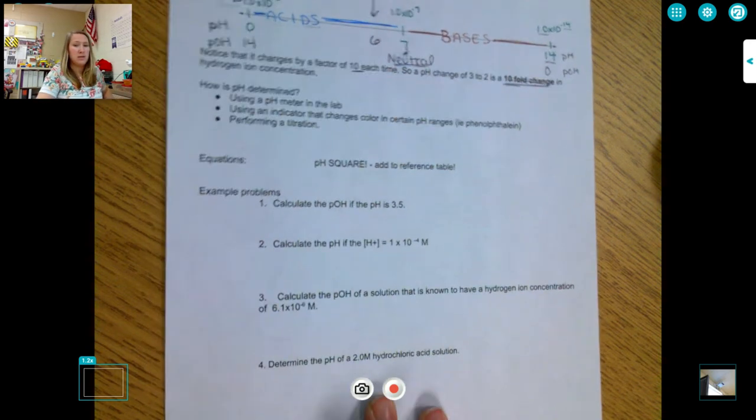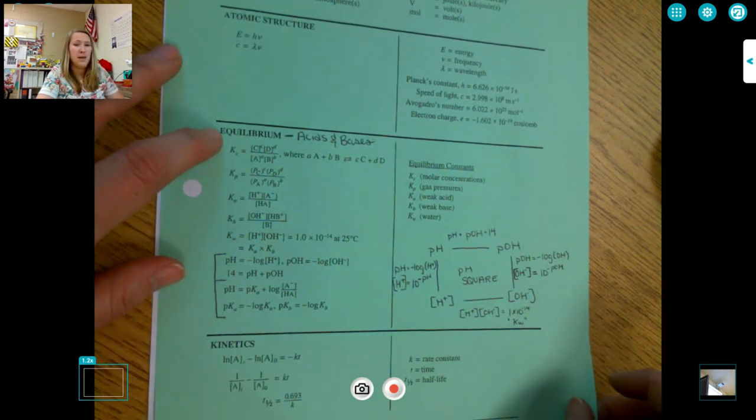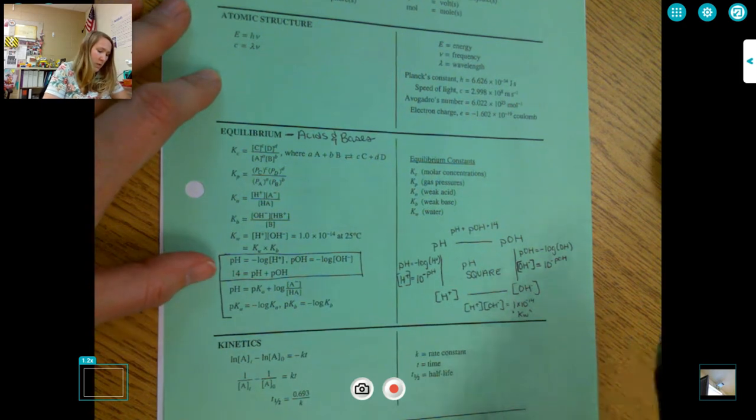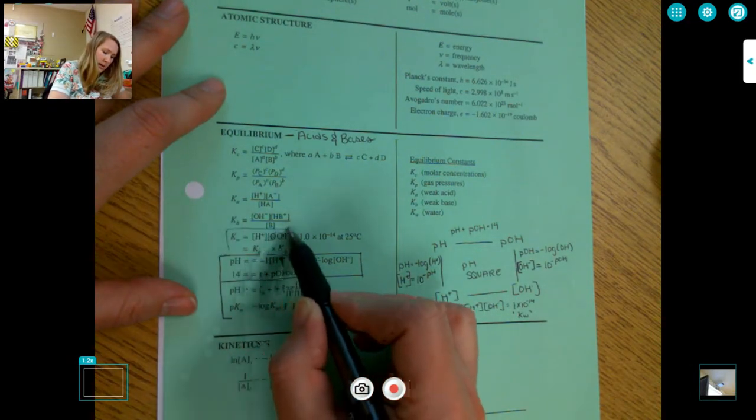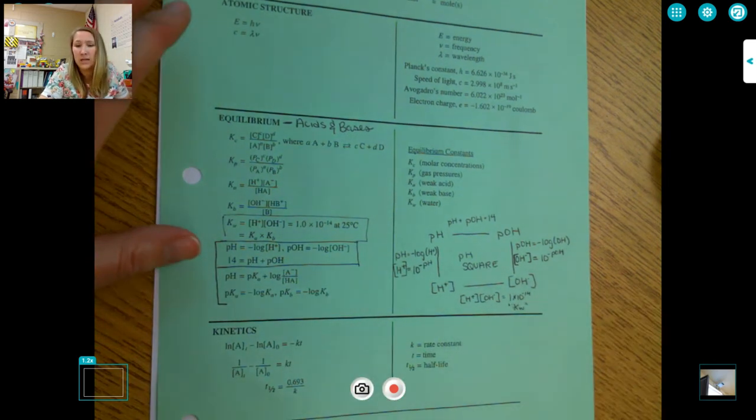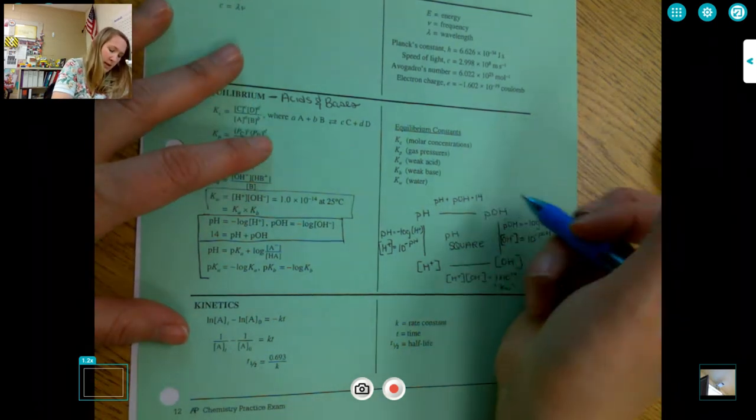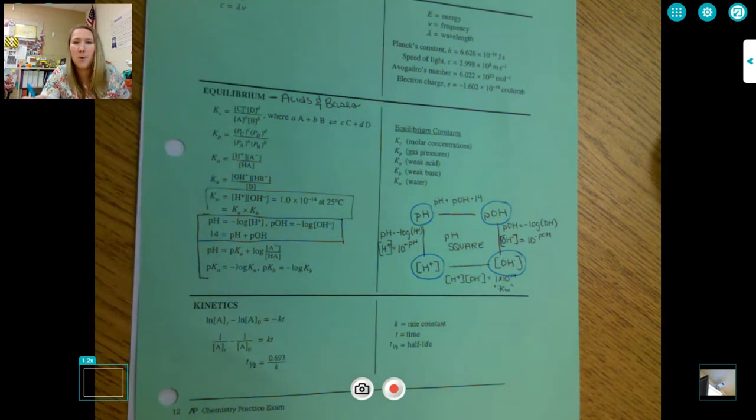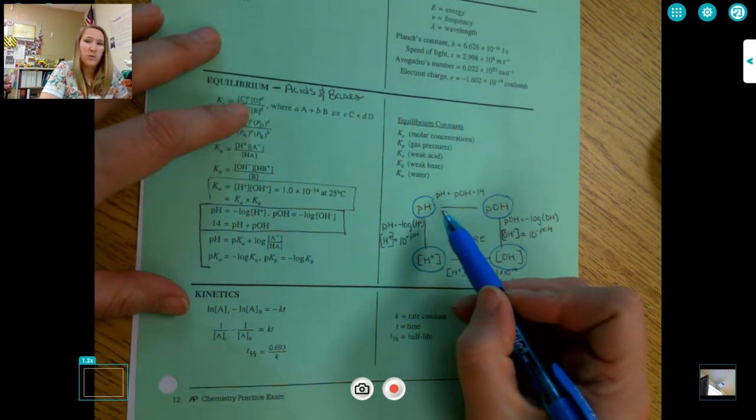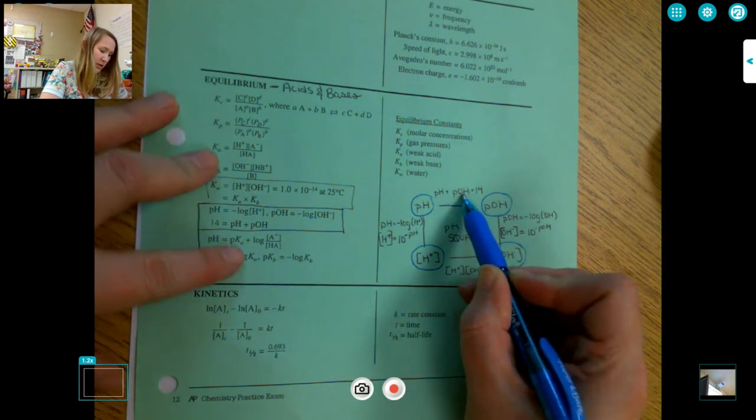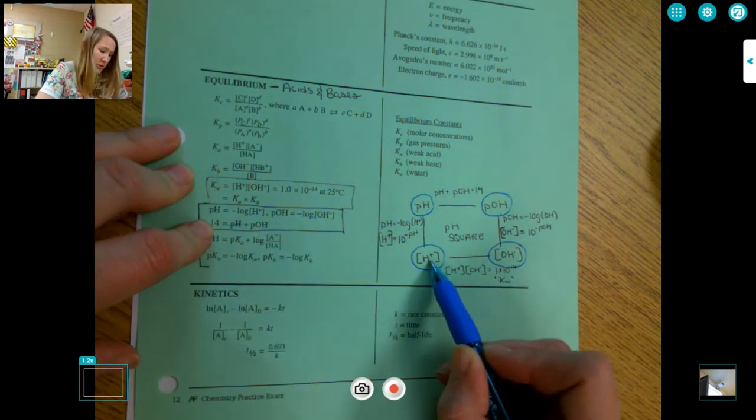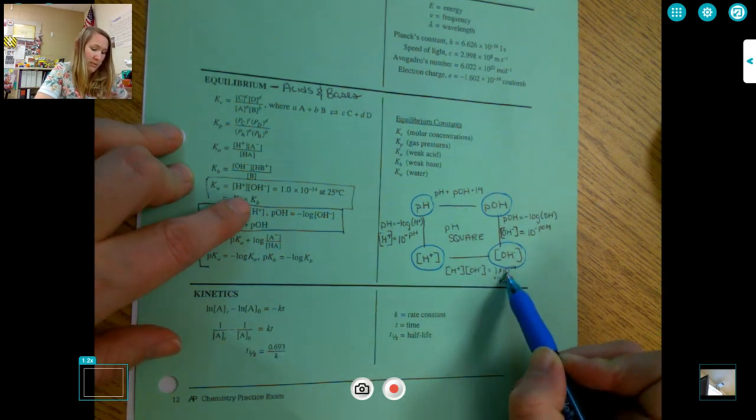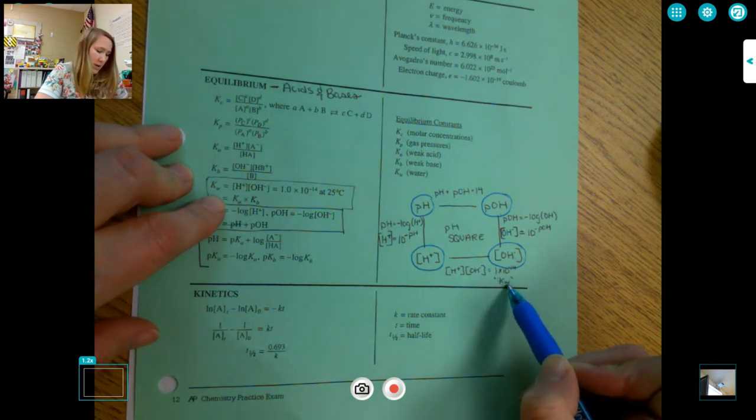So in terms of doing these calculations on your reference table with equilibrium, acids and bases fall under our equilibrium section. And we are going to focus on these here. We will also use this guy a little bit as well. I would suggest drawing your pH square over here on the side. In my pH square, on my corners, I have pH, POH, hydrogen ion concentration, and hydroxide ion concentration. So it's like a mole town for acid-base calculations. My relationship between pH and POH is pH plus POH equals 14. My relationship between hydrogen ion concentration and hydroxide ion concentration is hydrogen ion concentration times hydroxide ion concentration equals 1 times 10 to the negative 14, which has a fancy name as the dissociation constant of water.